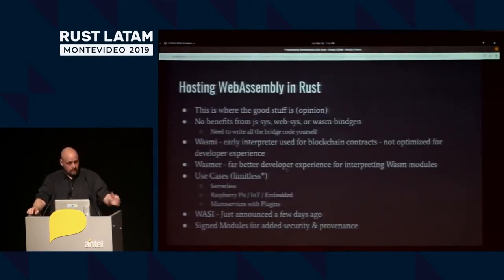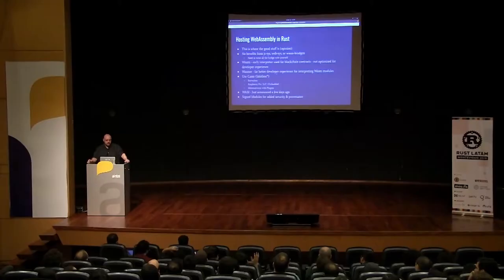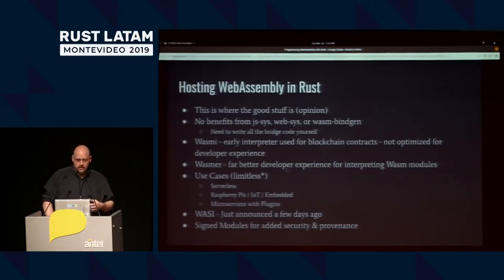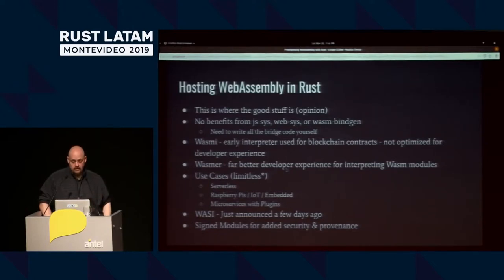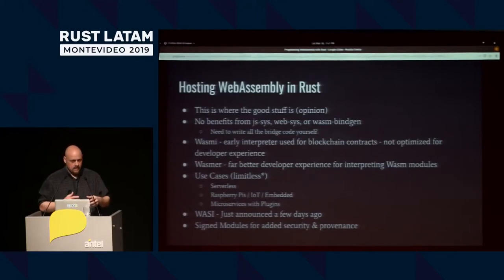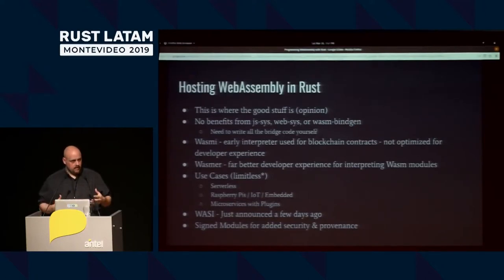Being able to host a WebAssembly module in Rust is where I think some of the real power comes from — not just because I like hosting stuff in Rust, but because if Rust can host it, then so too can so many other things. We don't currently have a tool that generates all the magic smoke and mirrors that we do for JavaScript, so a lot of this stuff is still a little rough around the edges. There was a crate called WASME that came out of blockchain contract work, and as a result the developer experience isn't designed for common everyday use — it's not a super friendly library.